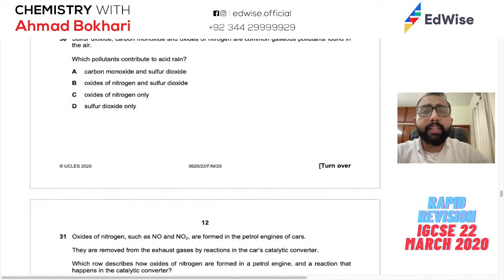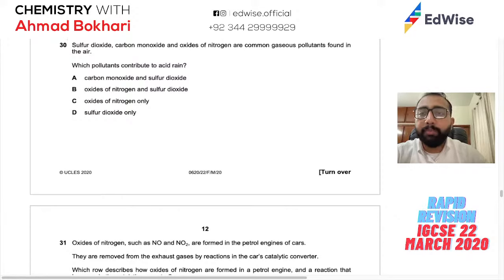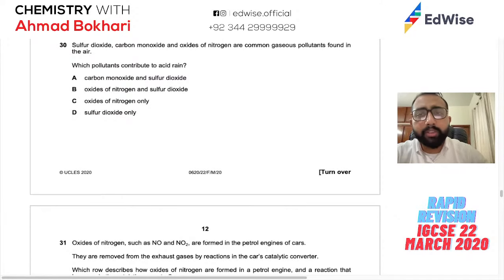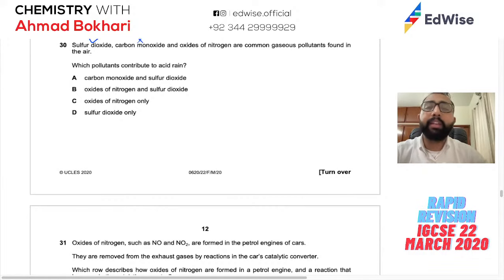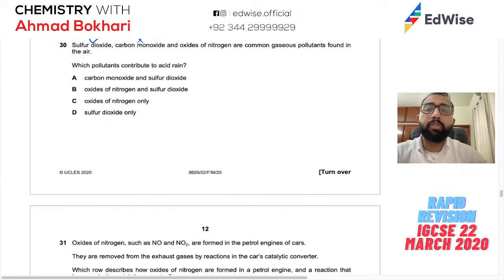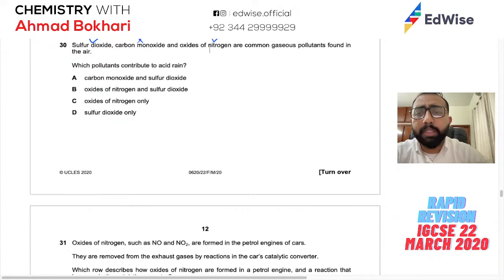Question 31: Sulfur dioxide, carbon monoxide, and oxides of nitrogen are common gas pollutants. Which contribute to acid rain? Carbon monoxide is neutral — does not cause acid rain. Sulfur dioxide is acidic — does. NO2 is acidic — does. Both sulfur dioxide and oxides of nitrogen contribute to acid rain. Answer: B.